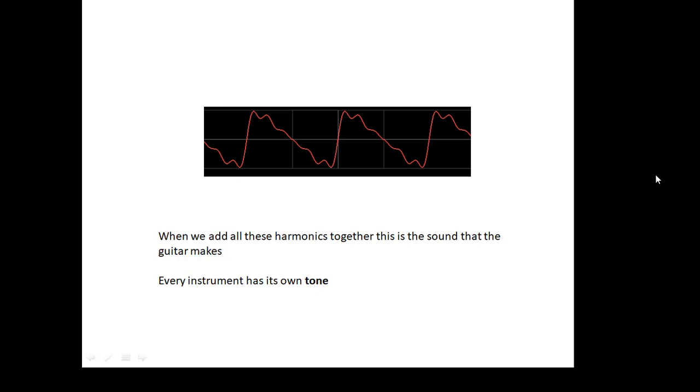When we pluck the string of a stringed instrument like a guitar, we actually get all of these harmonics happening together at the same time. Instead of getting a simple smooth sine wave, we get something more complicated but hopefully sounds quite nice. Each instrument has its own tone because we get a different mixture of harmonics when we pluck it or bow it. This is the sound that we actually get from the guitar.